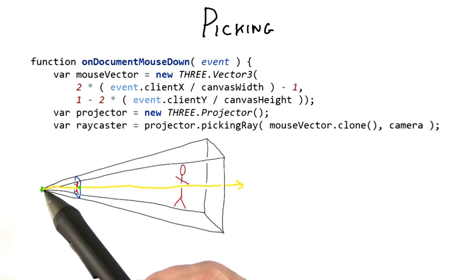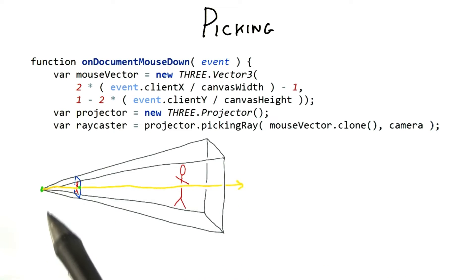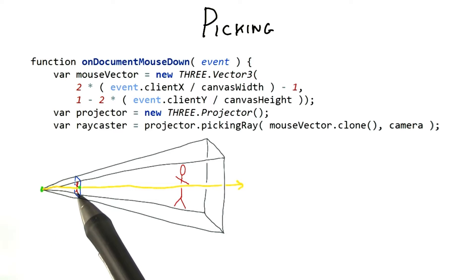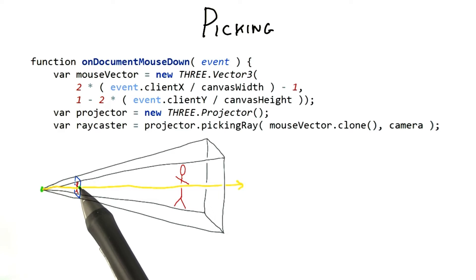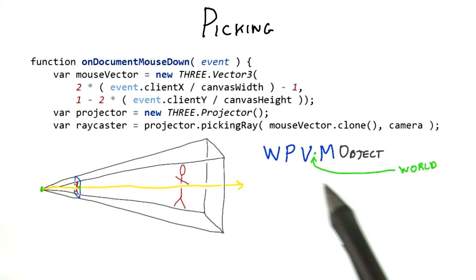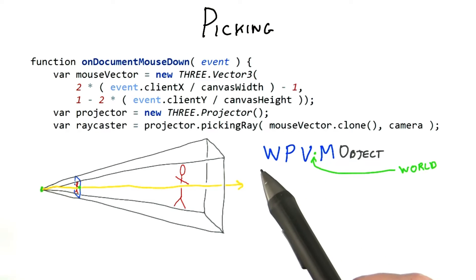To form a ray from the eye through the screen, we need two points. One is the eye's position in world space — that's easy. The other is formed using a point on the screen, that point being located wherever the user clicked the mouse. What we want to know is this point's location in world space. To do so, we need to travel upstream, back along the chain of transformations.